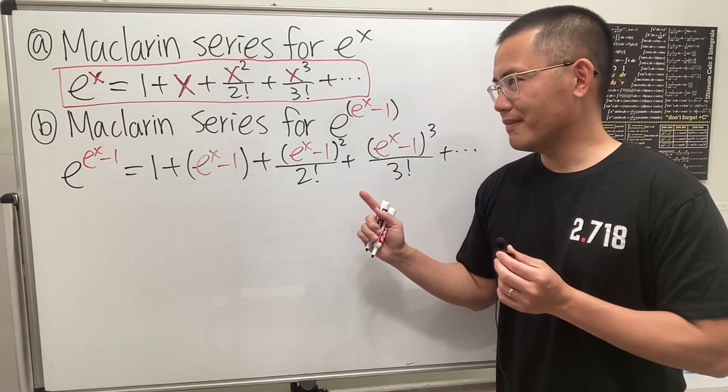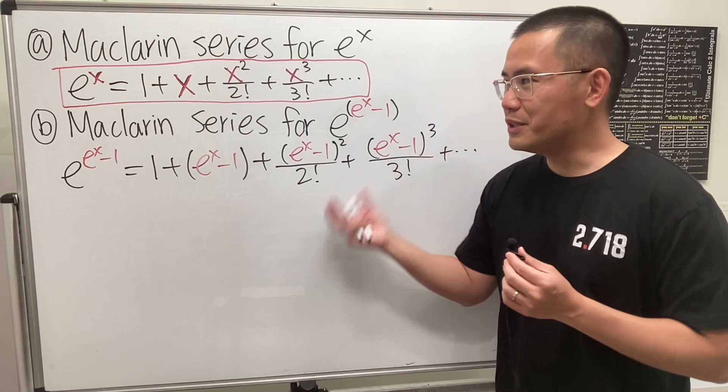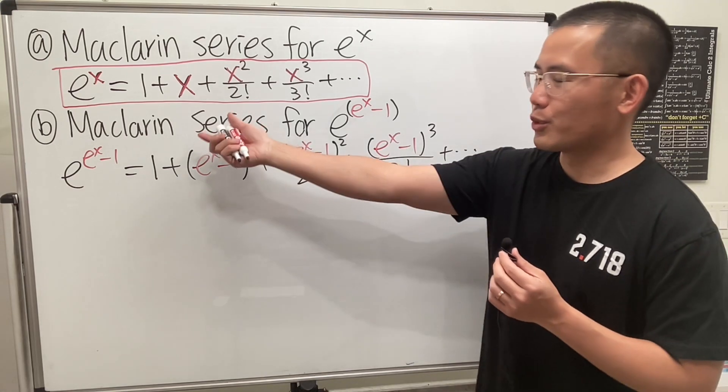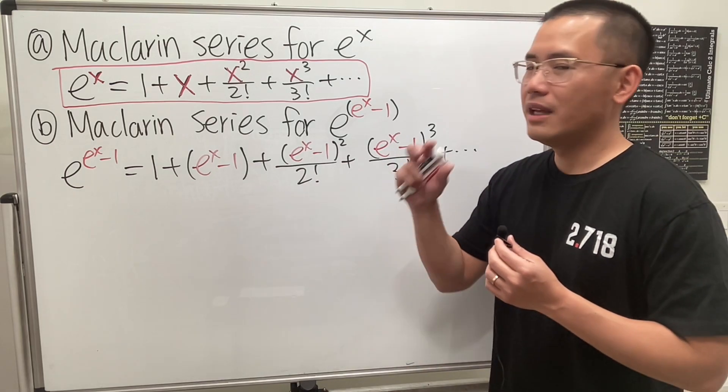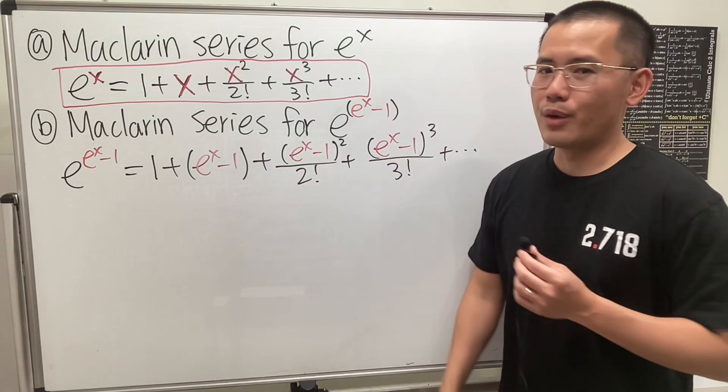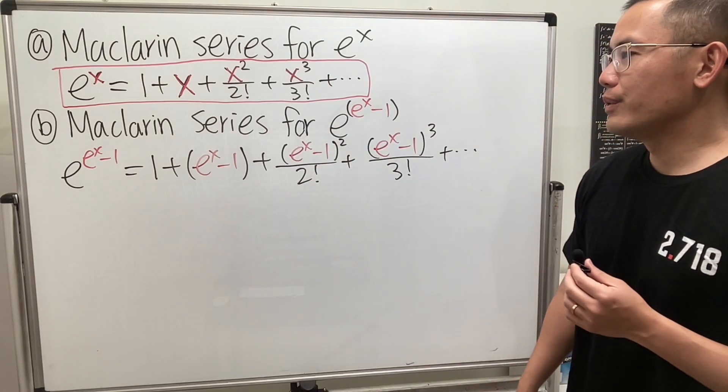That's the first step. This is not a power series though, because for a series to be a power series or Maclaurin series, it has to be polynomials, right? Meaning x to some whole number power. We don't want exponentials. So once you get to this point, then you can...